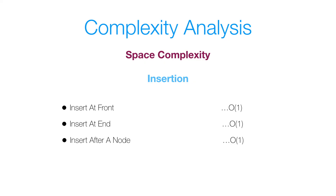For space complexity of insertion: inserting at the front doesn't use any extra space, so that's constant space. Similarly, inserting at the end uses no extra space — constant space. And inserting after a given node likewise uses no extra space, so that's also constant space complexity.